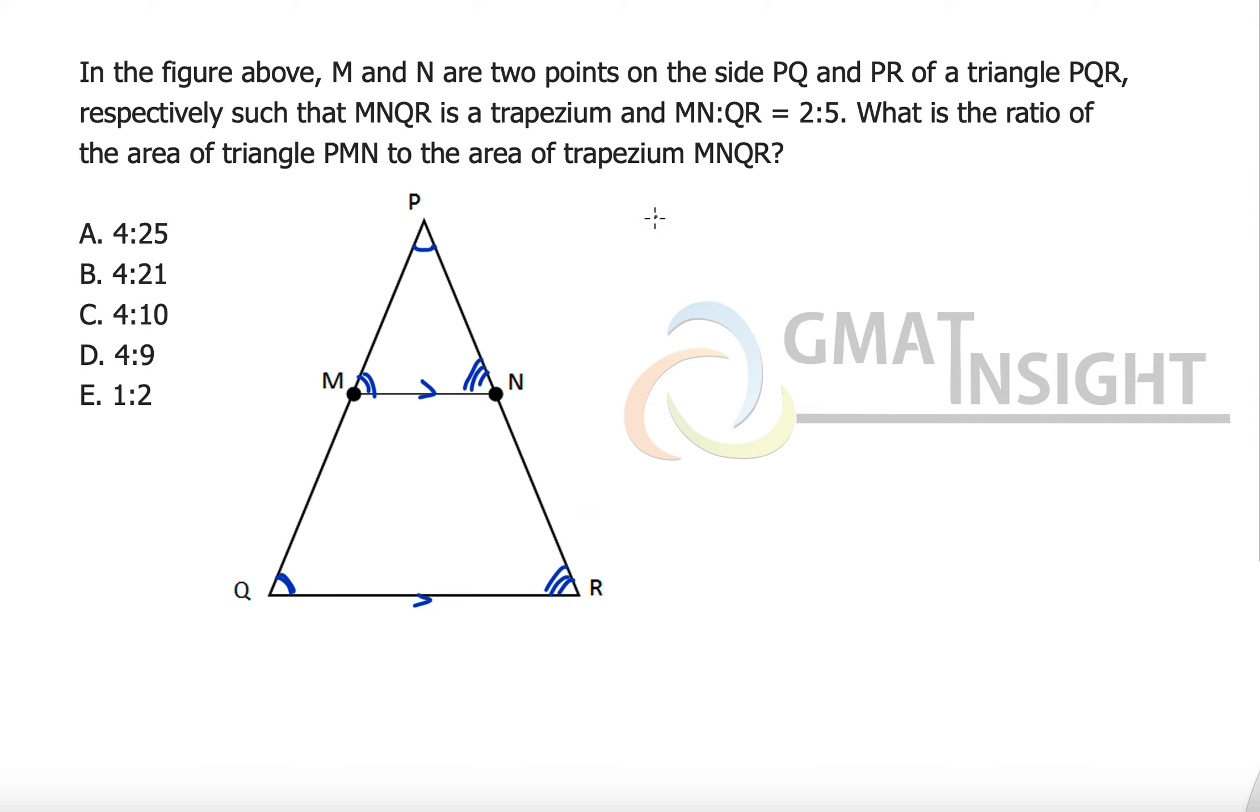We can say the ratio of the corresponding sides can be represented as PN over PR is equal to MN over QR is equal to PM over PQ.